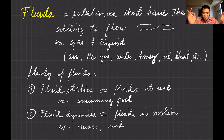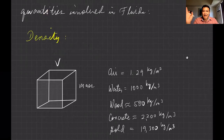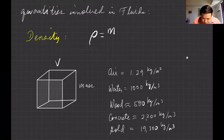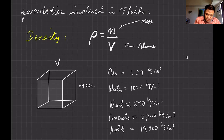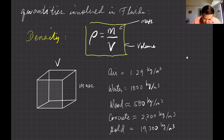Before we continue with fluid statics and fluid dynamics, let's define some terms used to study fluids: density and pressure. Density — specifically mass density — is defined as mass per unit volume. So the formula is density equals mass divided by volume, where volume is the space occupied by matter and mass is the amount of matter.